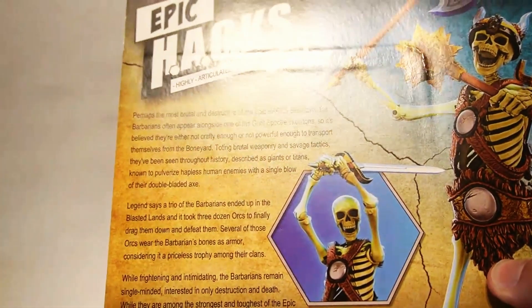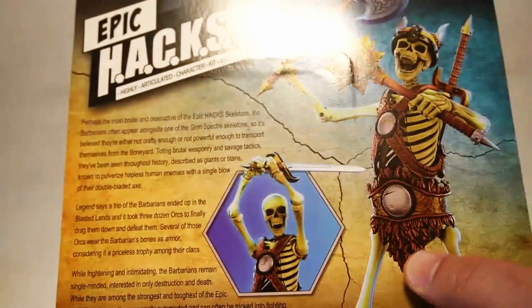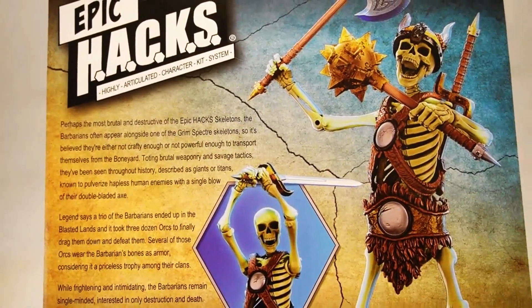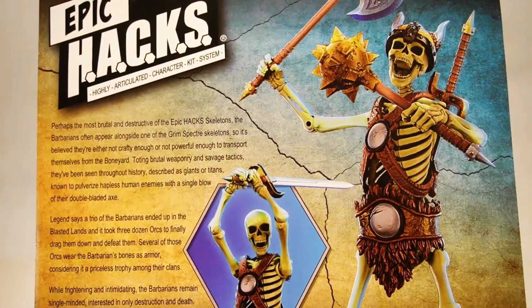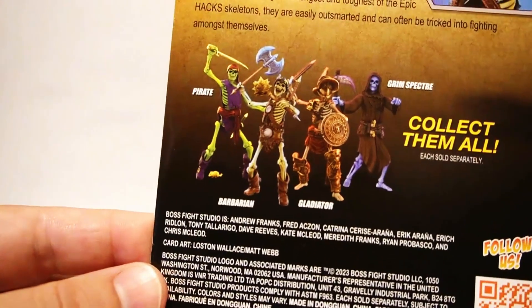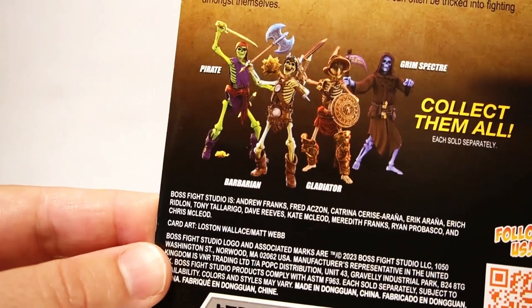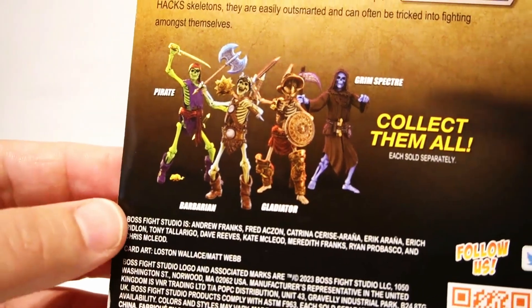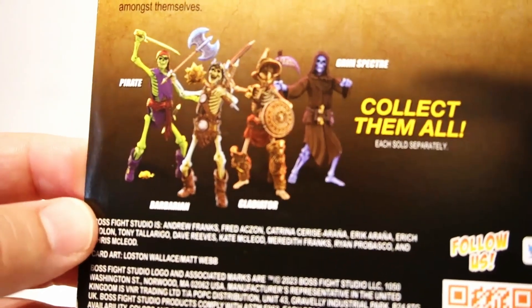Hacks stands for Highly Articulated Character Kit System and that's kind of what I was telling you guys about how the clothing, accessories, and all that is removable and you can swap those out for different parts. Today we're going to be looking at this Barbarian Deathmonger and here you can kind of see the other people that came out in that wave. There was a pirate, there was a gladiator, and then there was a grim specter and all four of those were cool.